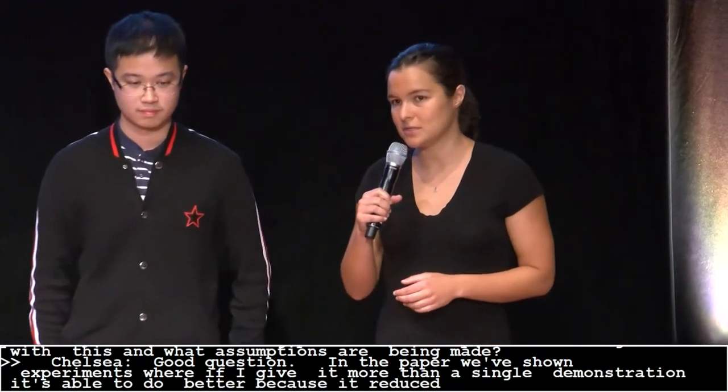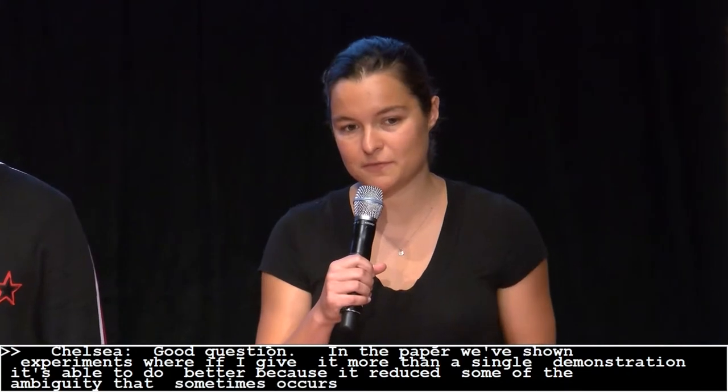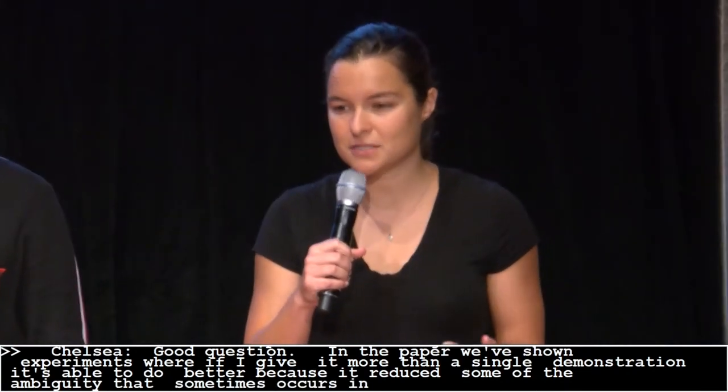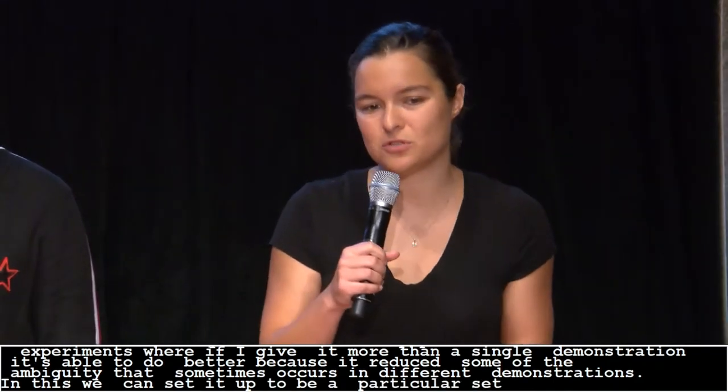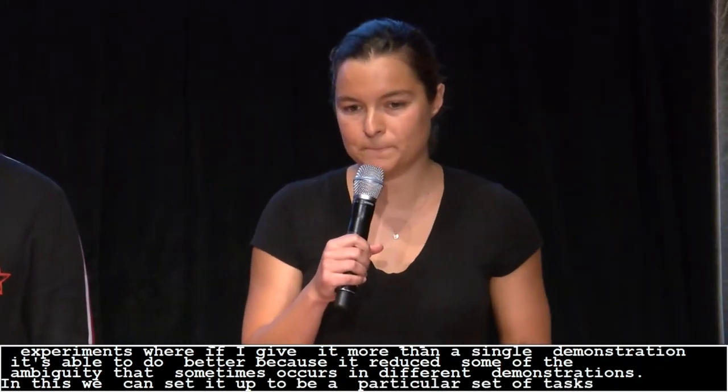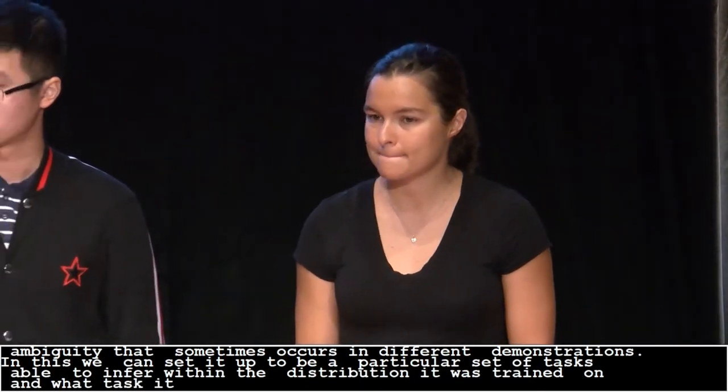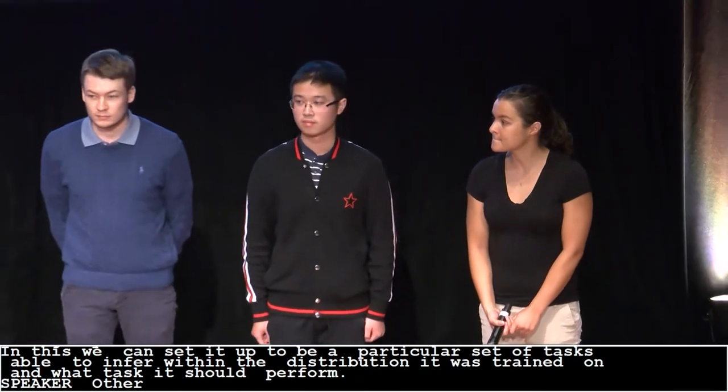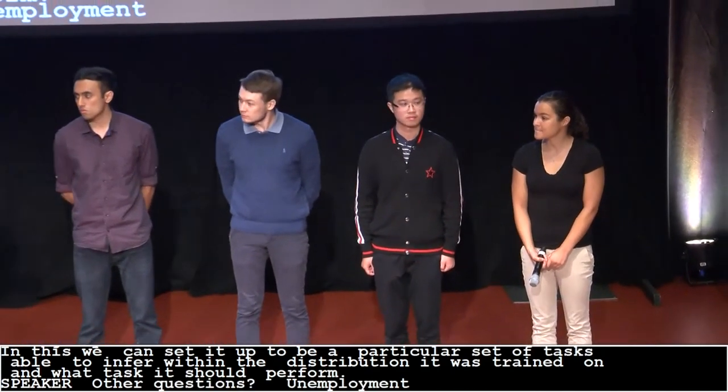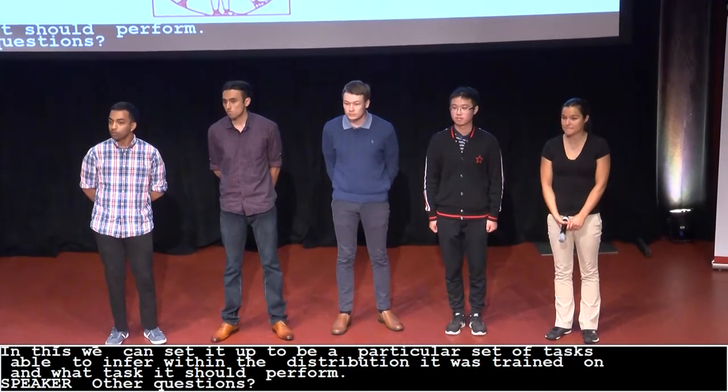So that's a good question. And actually in the paper we've shown experiments, in prior work we've shown experiments where if you give it more than a single demonstration, it's able to actually do better because it reduces some of the ambiguity that sometimes occurs in different demonstrations. In these particular experiments, we constrain the type of setup to be a particular set of tasks so it's able to infer within the set of tasks, within the distribution that was trained on, what task it should perform. Other questions?